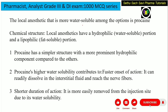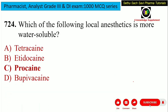The local anesthetic that is more water soluble is procaine. Looking at the chemical structure of procaine, it has a hydrophilic portion — that is the water soluble portion — as well as a lipophilic portion, that is the fat soluble portion. Procaine has a relatively simpler structure, so it is more dominantly hydrophilic. Procaine's higher water solubility contributes to a faster onset of action because it readily dissolves into the infiltration fluids. It also has a shorter duration of action because it can be easily removed from the site of injection. So the answer is procaine.